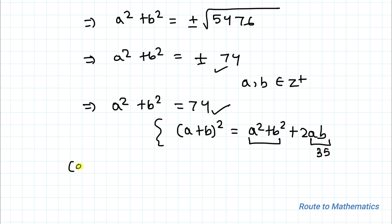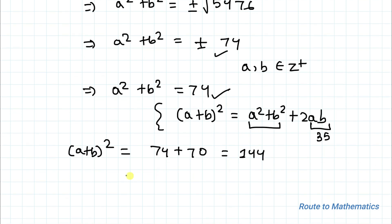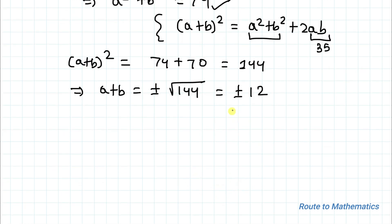Substituting the values, (a+b)² equals 74 plus 70, which equals 144. Taking the square root of both sides, a+b equals plus or minus √144, which equals plus or minus 12. Since a and b are positive integers, the value of a+b equals 12 is our answer.